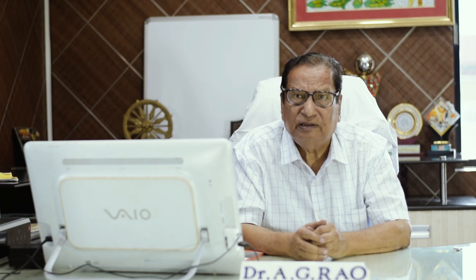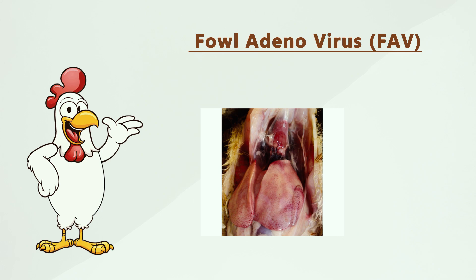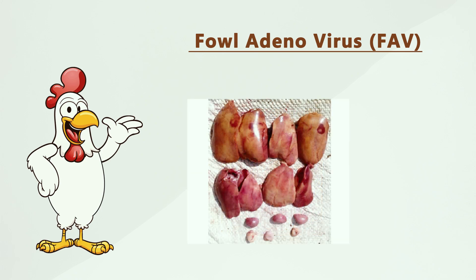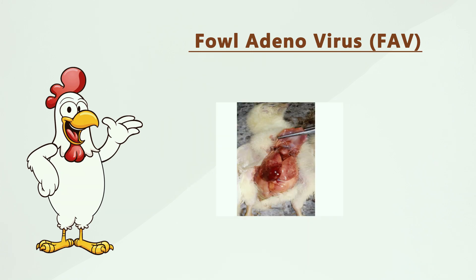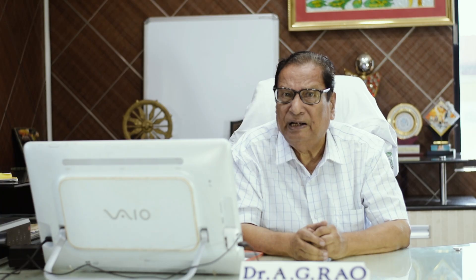Post-mortem lesions are most importantly seen in the liver, heart, and to some extent kidneys, bursa fabricius, and spleen. Livers are enlarged, pale yellow, and friable with multiple petechial hemorrhages. The spleen also shows atrophy — reduced in size — and the bursa fabricius is also reduced in size, indicating immunosuppression.